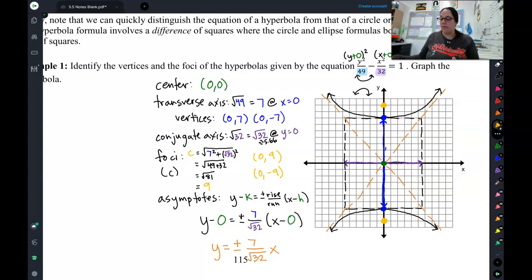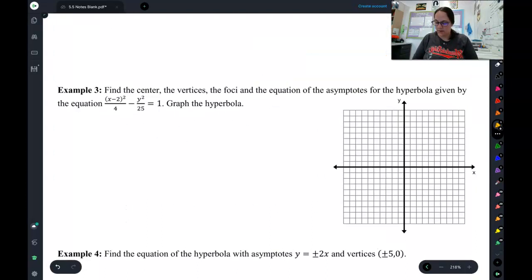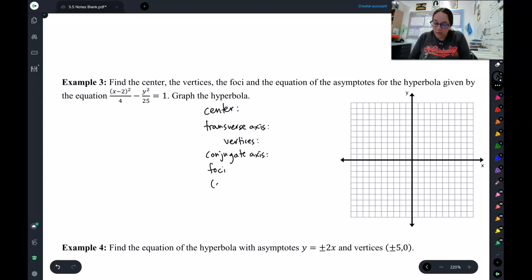So, now that you have done that one, what I would like you to do is fast forward to example 3. And I want you to pause the video and try this one. This is a new equation, but same process. So look at this equation, find the center, find the transverse axis, find your vertices, find your conjugate axis, find your foci, which will include finding C, and find the equation for your asymptotes. So, pause the video if you need to look back at your notes to try this. You can look back at your notes, but try to do this one on your own, and then when you're ready, come back and check to see how you did.